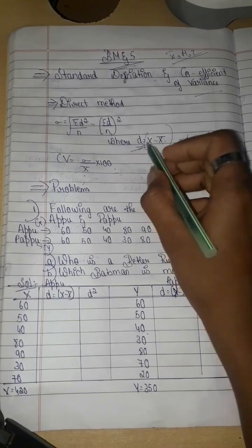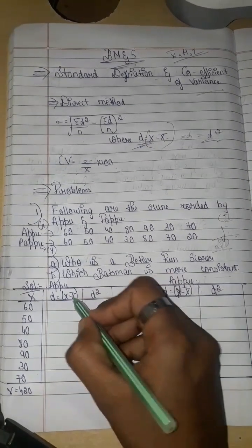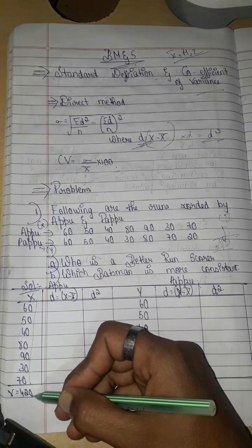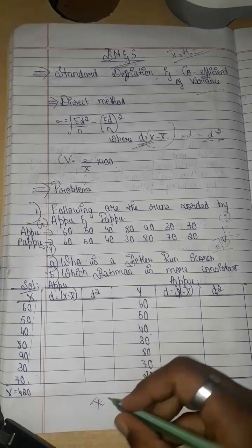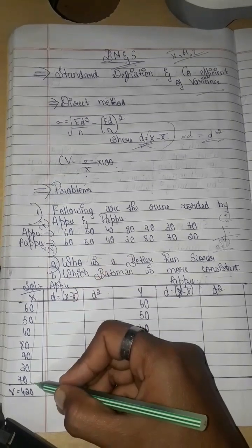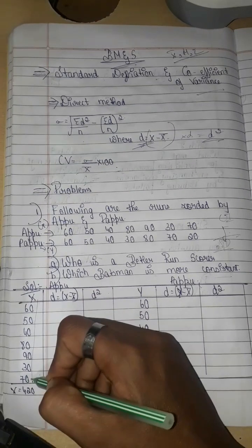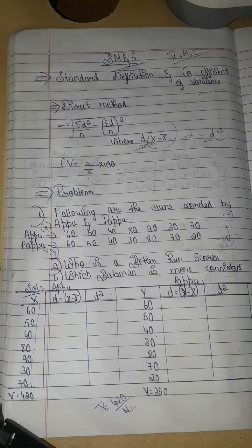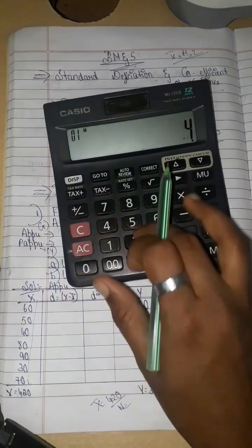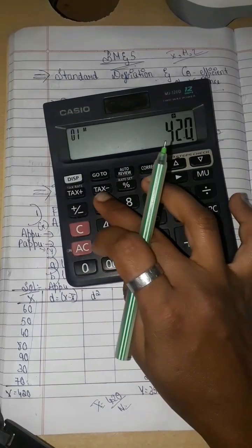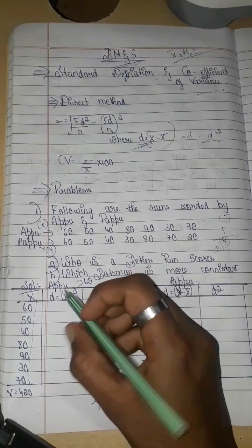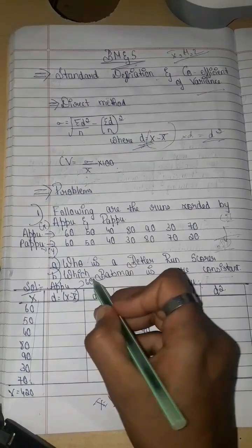First we will find d. We cannot find d² until we have x̄. So first find x̄. We add 420 divided by n. So x̄ equals 420 divided by 7, which gives x̄ equals 60. So d = x minus x̄. For x = 60, d = 60 minus 60 = 0.